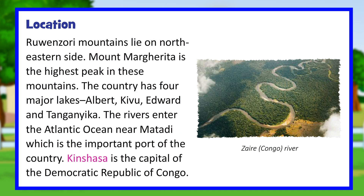The Ruwenzori Mountains lie on the northeastern side, and Mount Margherita is the highest peak in these mountains. The country has four major lakes: Albert, Kivu, Edward, and Tanganyika. The rivers enter the Atlantic Ocean near Matadi, which is an important port of the country.